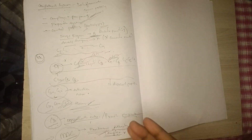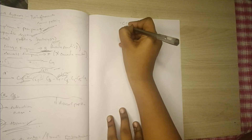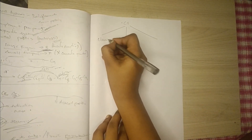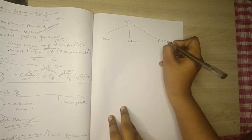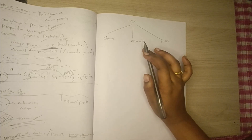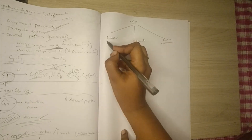The complement system acts through three pathways: the classic pathway, the alternate pathway, and the lectin pathway. Officially two pathways are recognized, but according to Robbins international editions, the lectin pathway is also included.